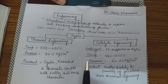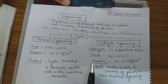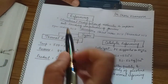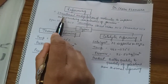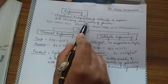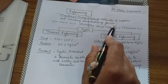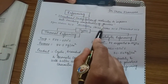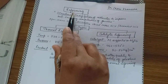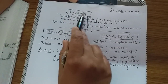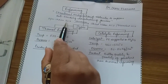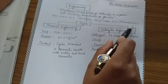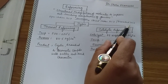Hello students, today we are going to complete the next topic: reforming. What is the meaning of reforming? Structure modifications of molecules to improve the anti-knocking character of gasoline is called reforming. In reforming, open chain hydrocarbons are converted into closed chain or branched chain hydrocarbons.